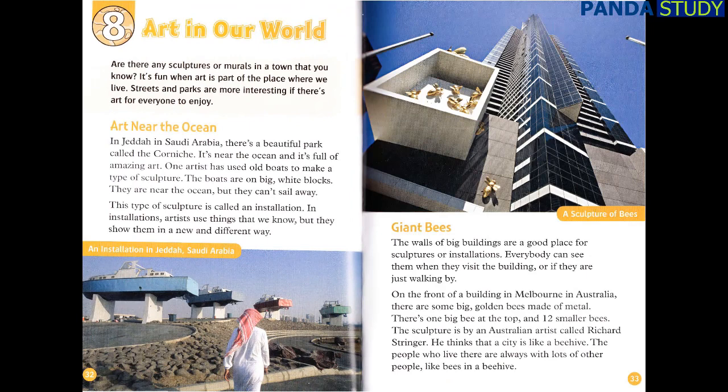Chapter 8: Art in Our World. Are there any sculptures or murals in a town that you know? It's fun when art is part of the place where we live. Streets and parks are more interesting if there's art for everyone to enjoy. Art near the Ocean. In Jeddah in Saudi Arabia, there's a beautiful park called the Corniche. It's near the ocean and it's full of amazing art. One artist has used old boats to make a type of sculpture. The boats are on big white blocks. They are near the ocean, but they can't sail away. This type of sculpture is called an installation. In installations, artists use things that we know, but they show them in a new and different way.